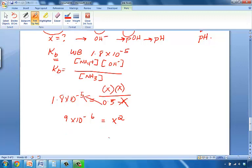Let's take the square root of this and get X, and we should end up with 0.003. X, of course, is hydroxide, so we can find pOH. pOH is equal to the negative log of hydroxide, which is 0.003 according to the calculations that we just did, and the pOH value then would be 2.53.